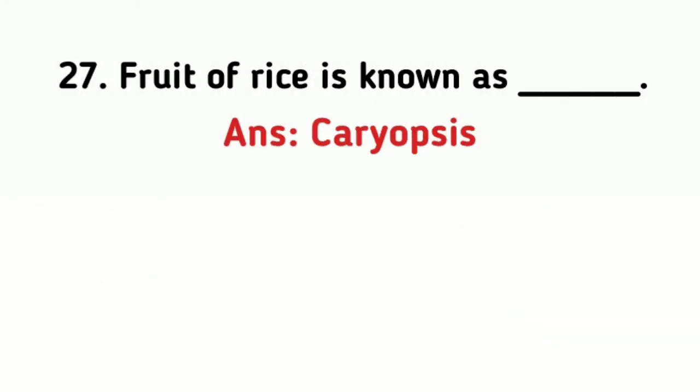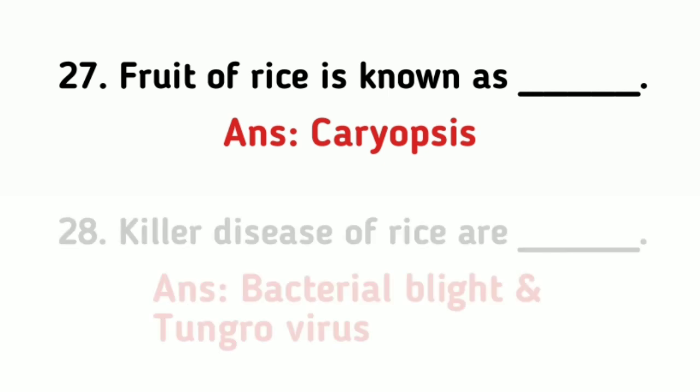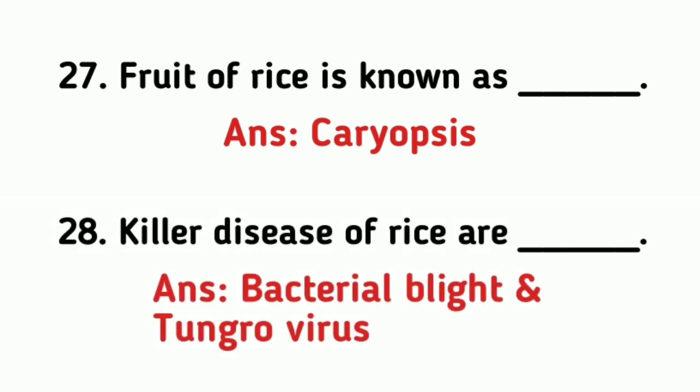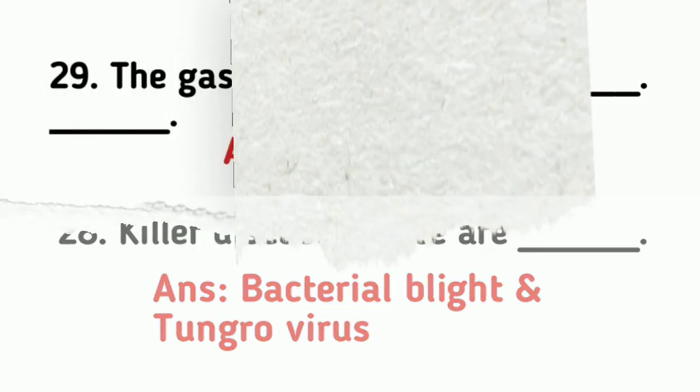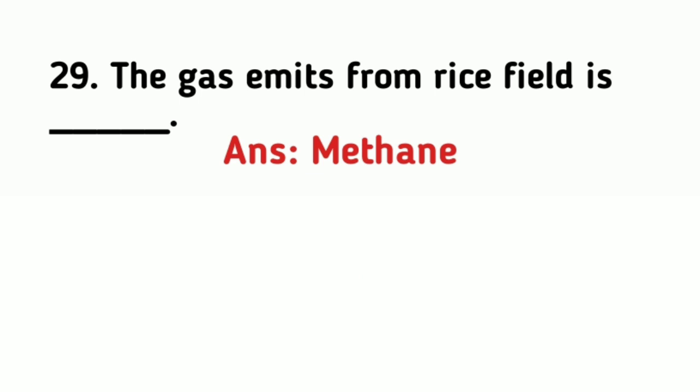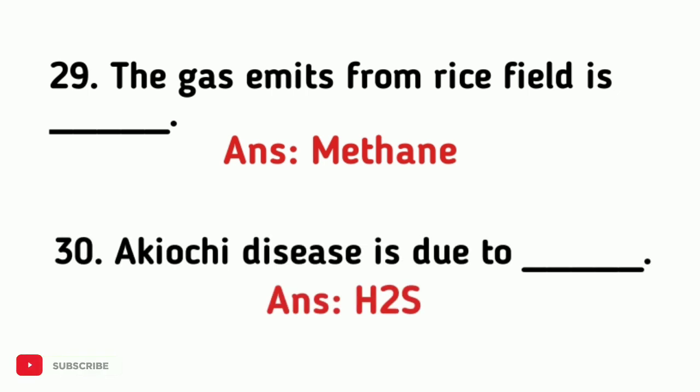The fruit of rice is known as caryopsis. The killer diseases of rice are bacterial blight and tungro virus. The gas emitted from the rice field is methane. Akiochi disease is due to hydrogen sulfide toxicity.